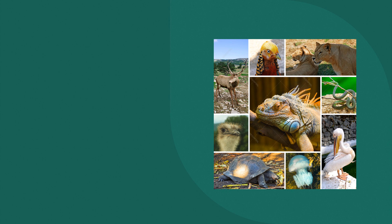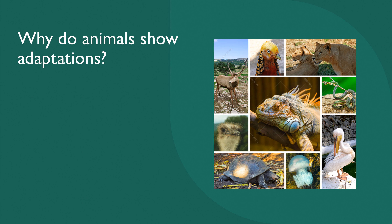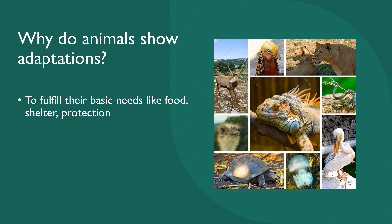Now I am going to show you the main reasons for animals showing adaptations. The first reason is to fulfill their basic needs like food, shelter, and protection. In Sinhala, basic needs means 'molika avashata.' Basic needs are very important for the existence of an animal — if an animal does not get food, shelter, or protection, it will die. So to fulfill these needs, they have to adapt to their living environment.